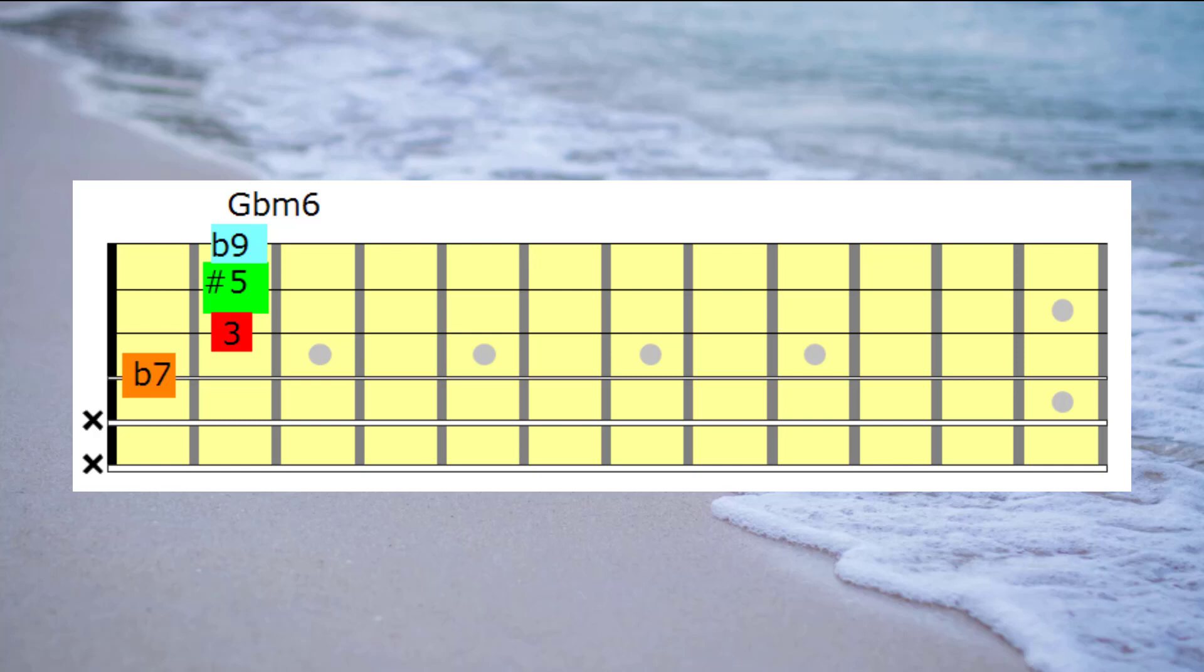So as you can see, the minor 6th on the flat 2 of a dominant creates the altered sounds. Right then, so our first project will be to learn the 4 inversions of G flat minor 6th. Here we go.